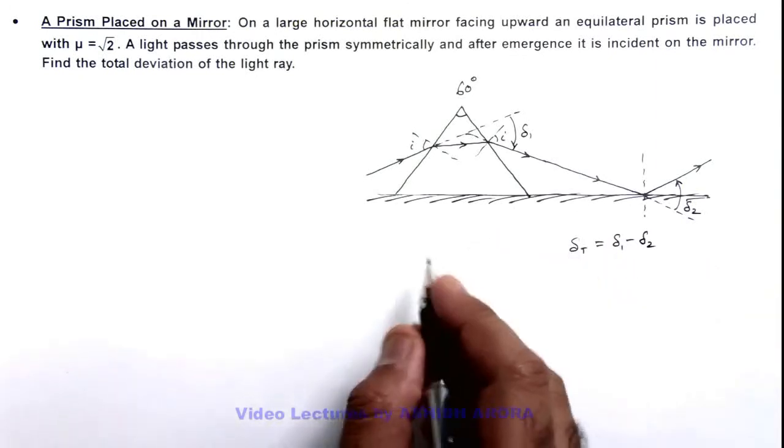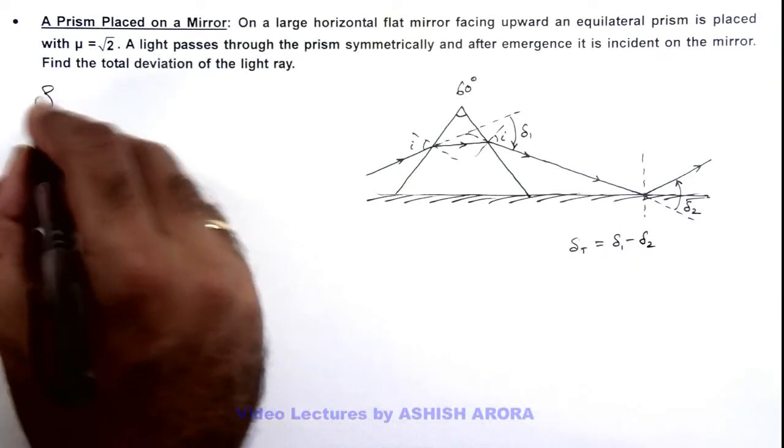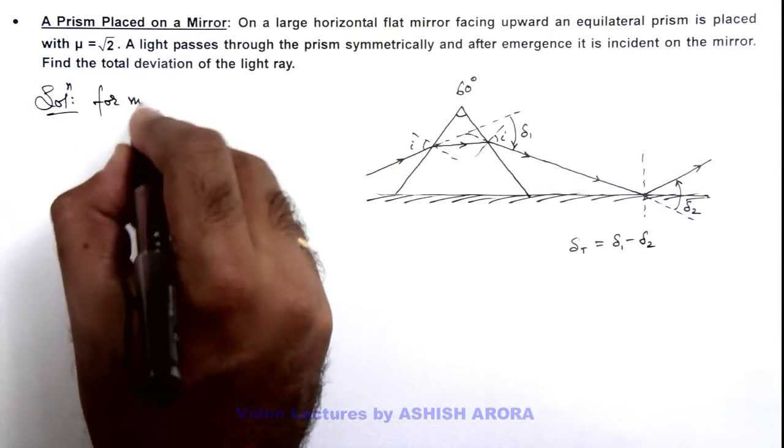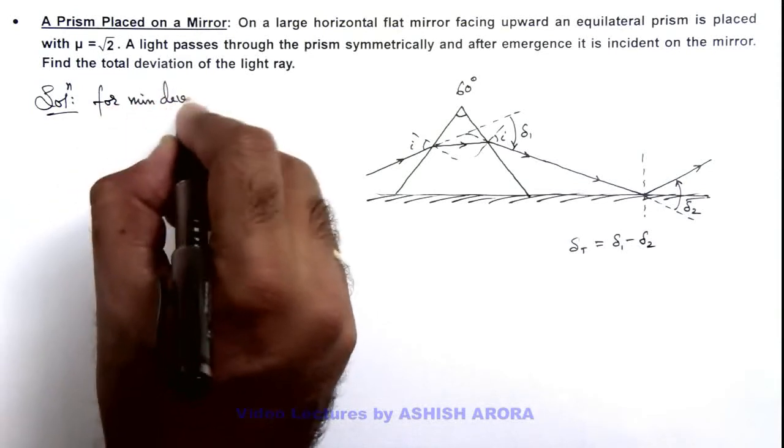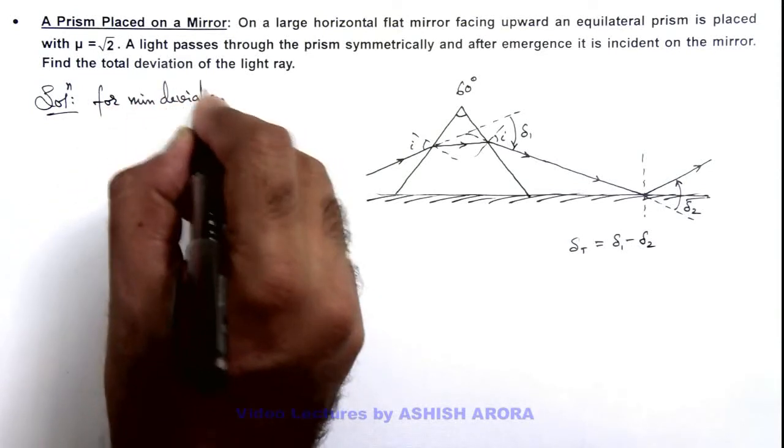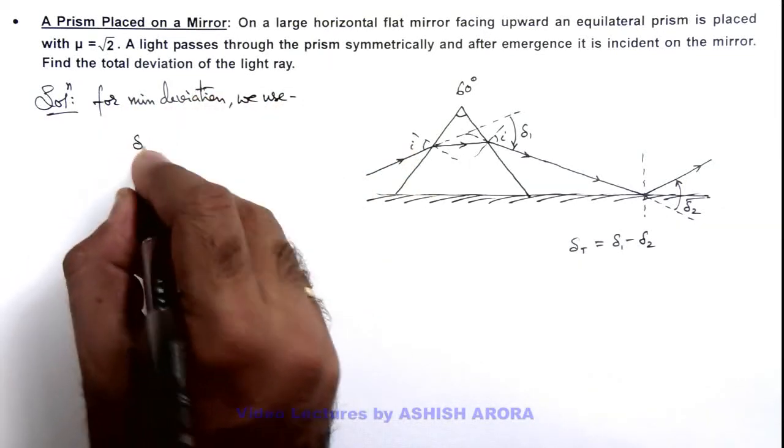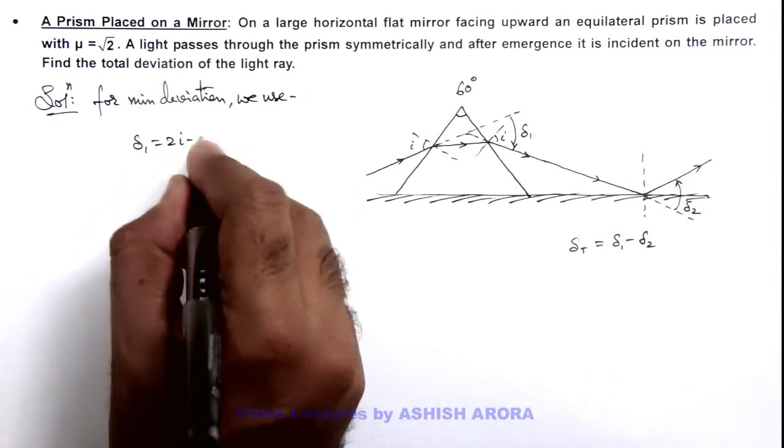If we calculate the values here we can see delta 2. In solution, for minimum deviation of light ray we use delta 1 is equal to 2i minus A.